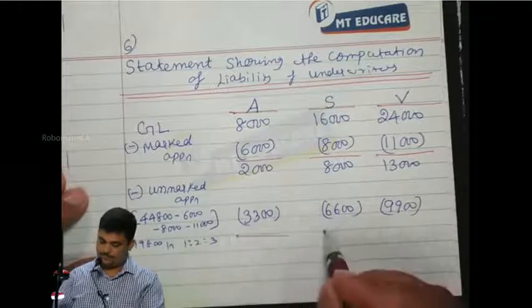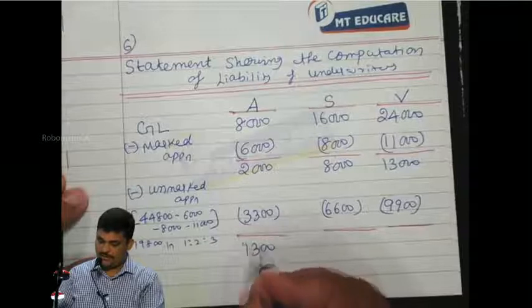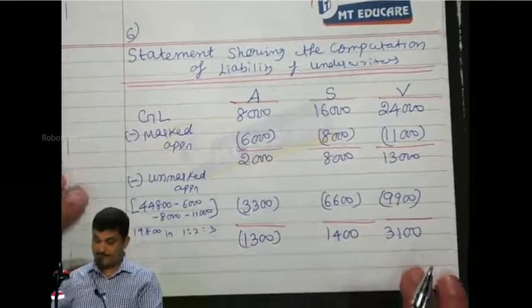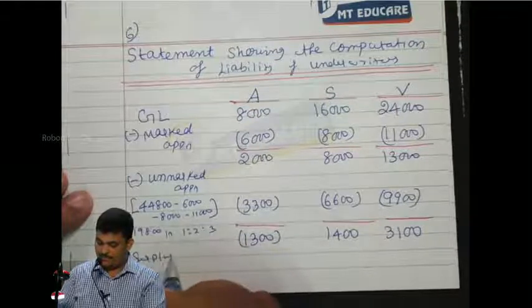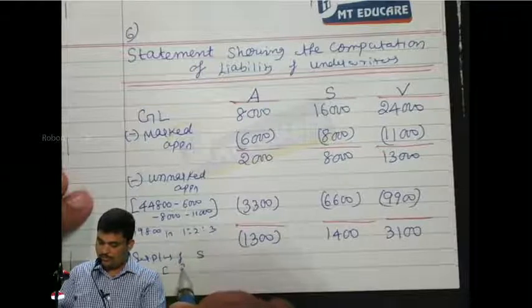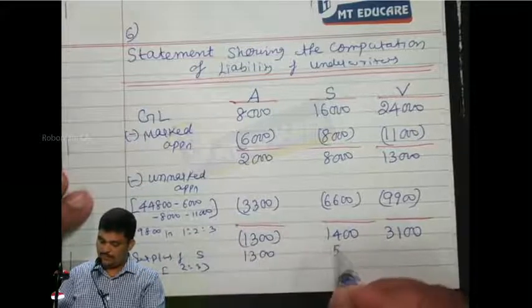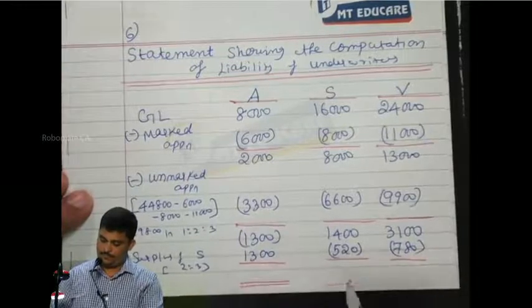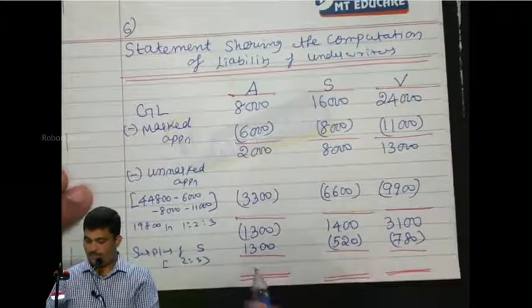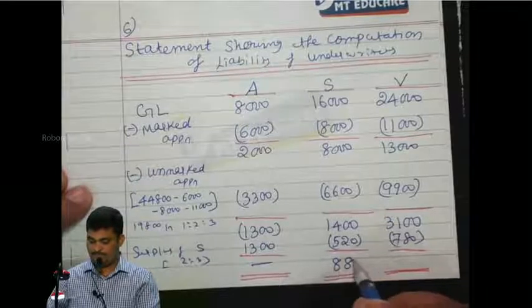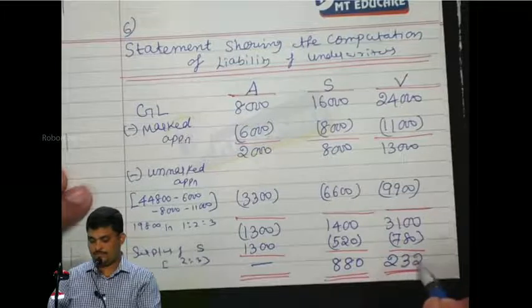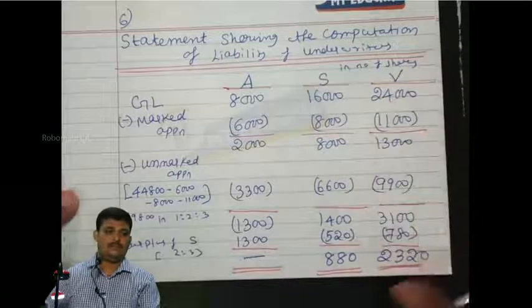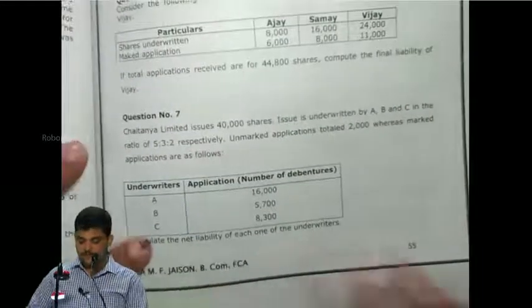We get negative 1,300, 1,400, and zero. Then surplus of Samay in the ratio 2:3 gives 520 and 780. This is the final liability of Vijay.